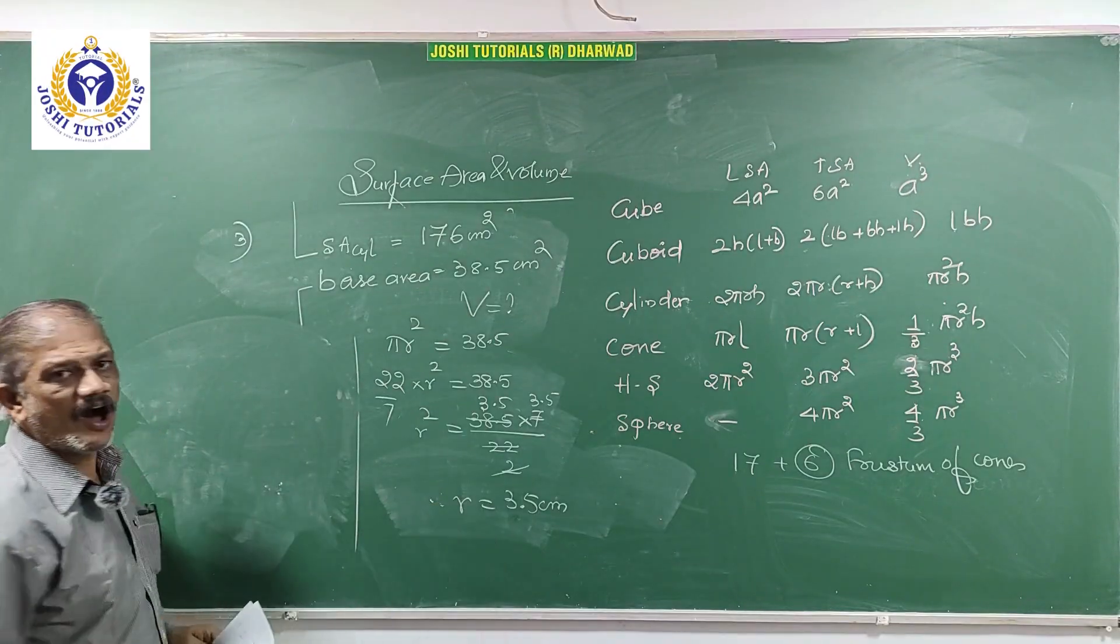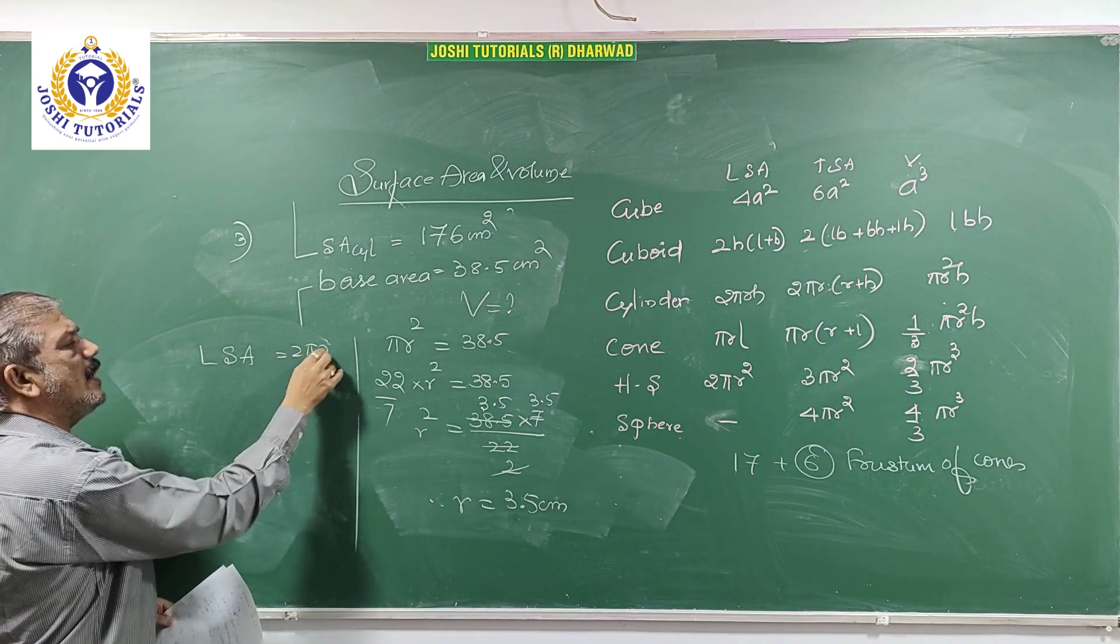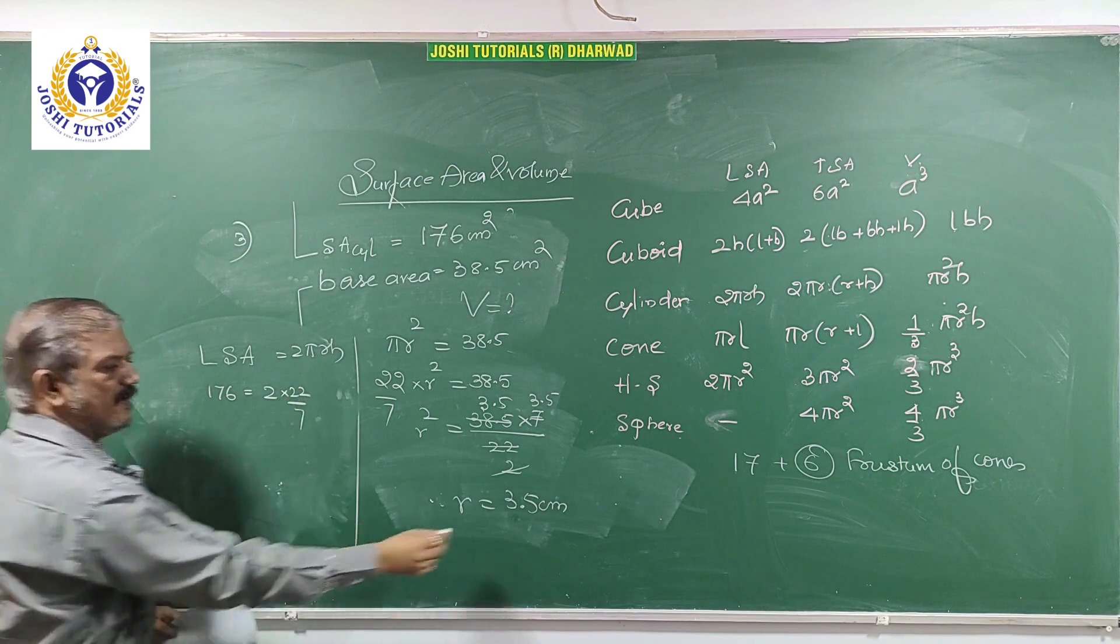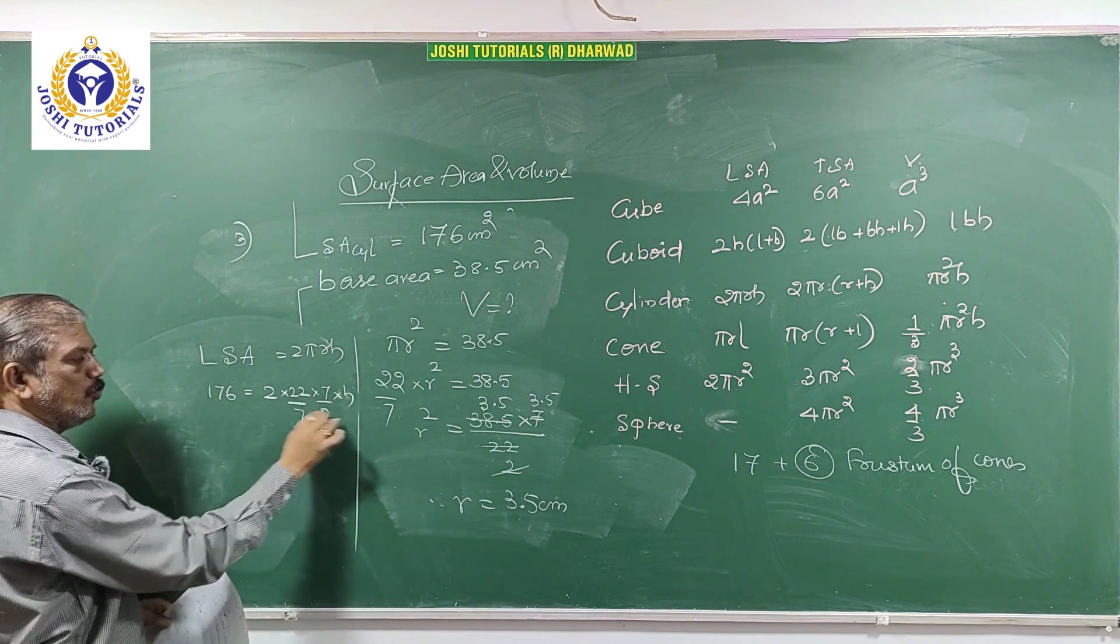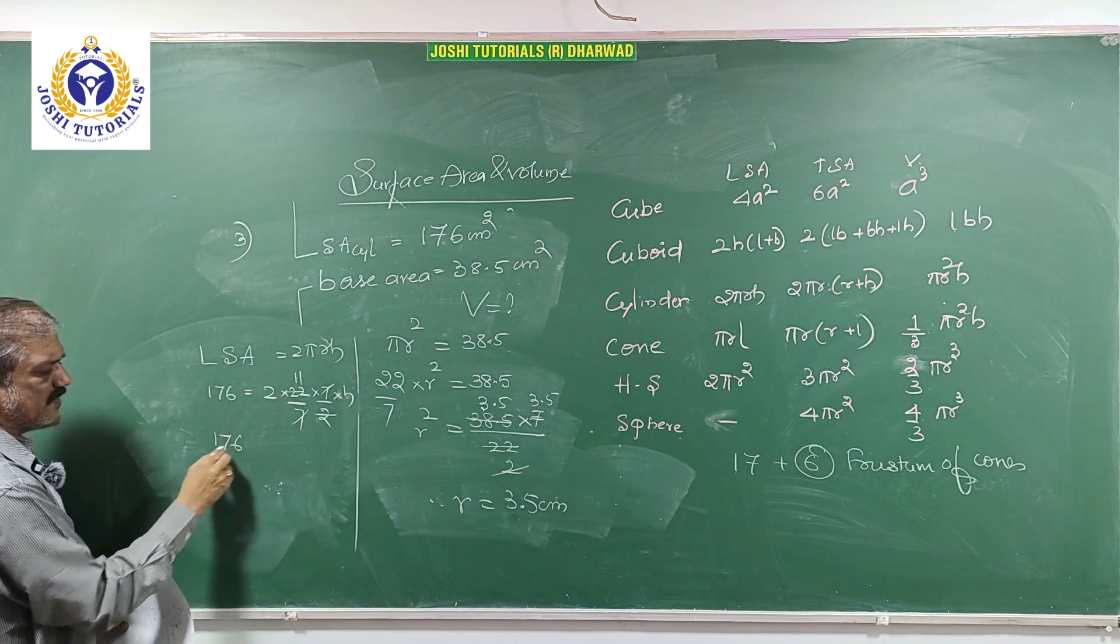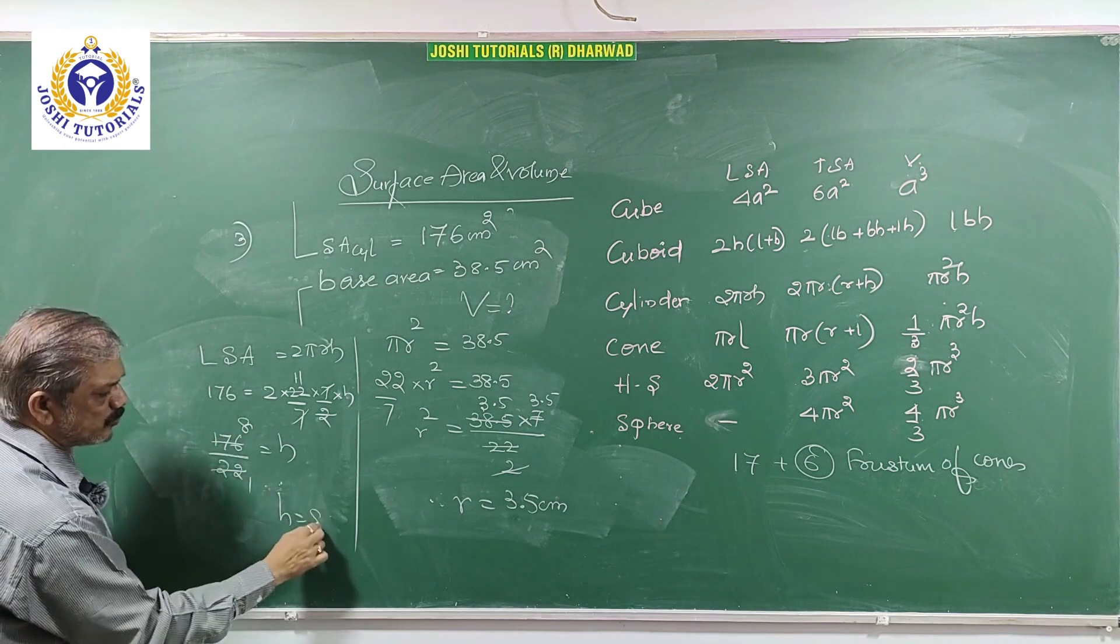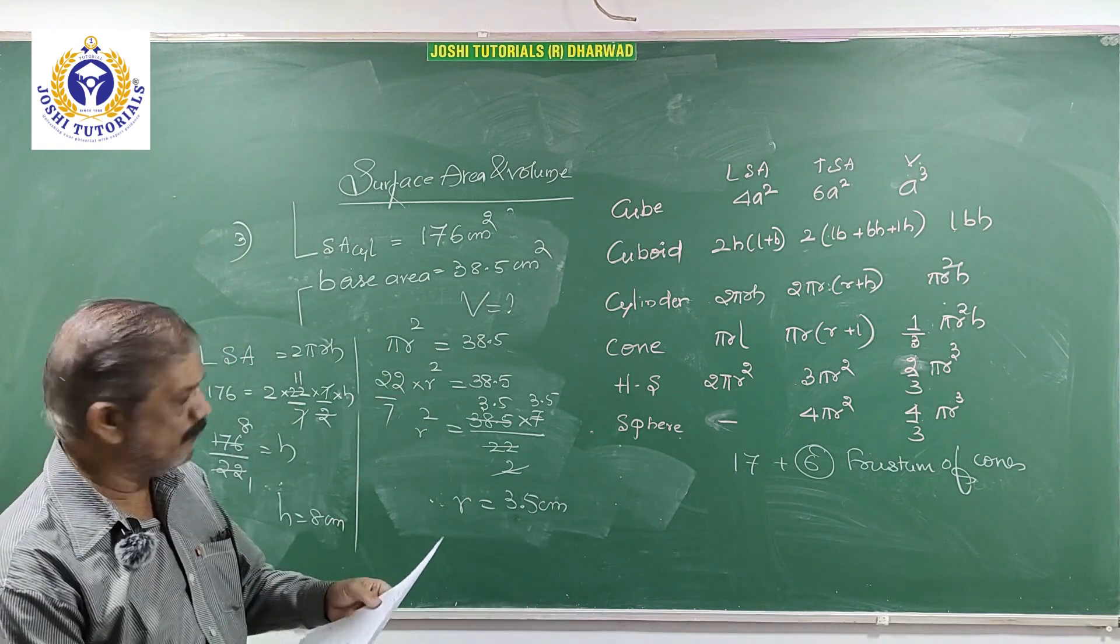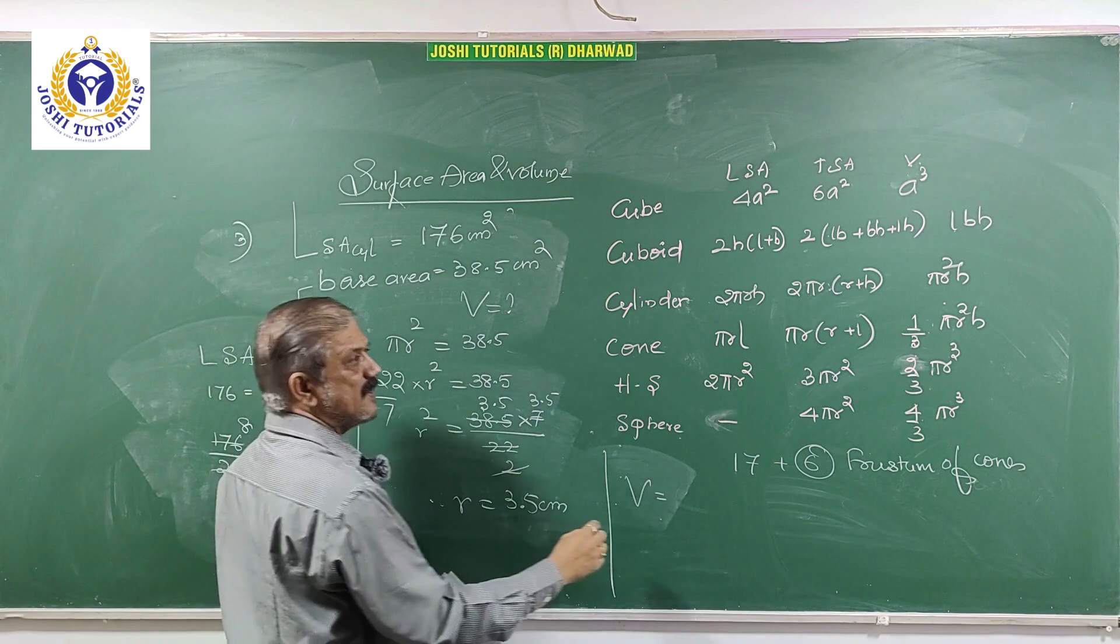Now after getting the value of R equal to 3.5, you must know LSA of cylinder is 2πRH. LSA is 176, 2 into 22/7, radius instead of 3.5 write it as 7/2 into H. 2 1s are, 2 11s are, 7 7 cancels, 11 2s are 22, 176 by 22 equal to H. 1s are, 8s are, height equal to 8. You have got height, you have got radius.